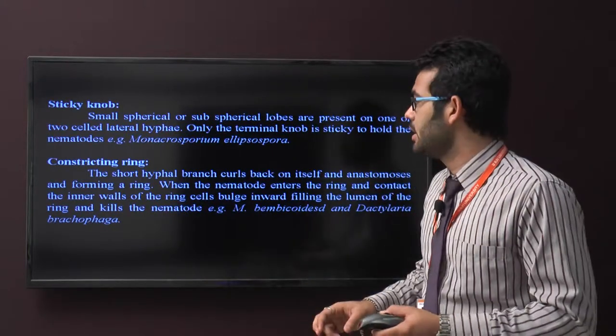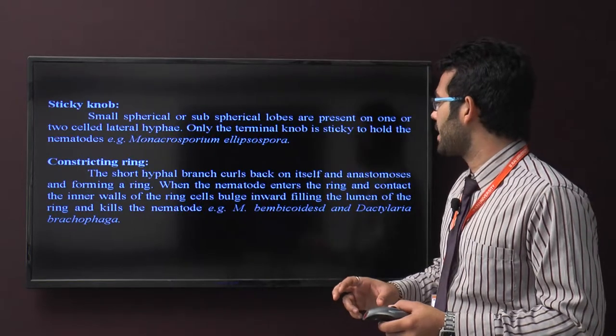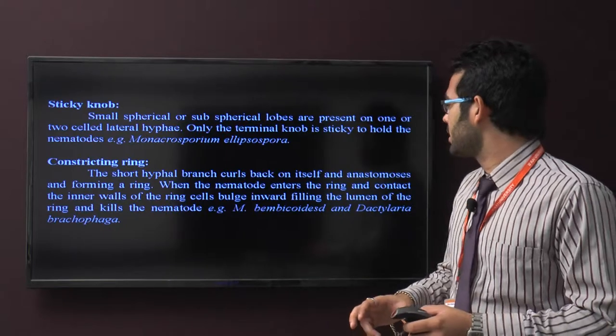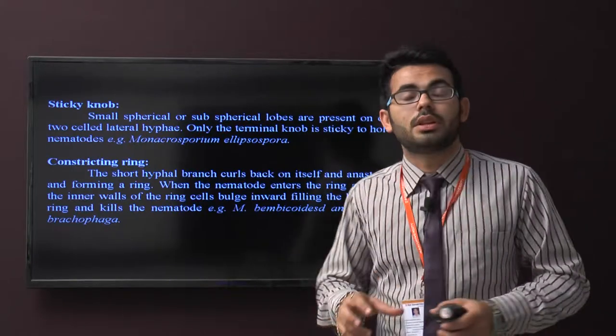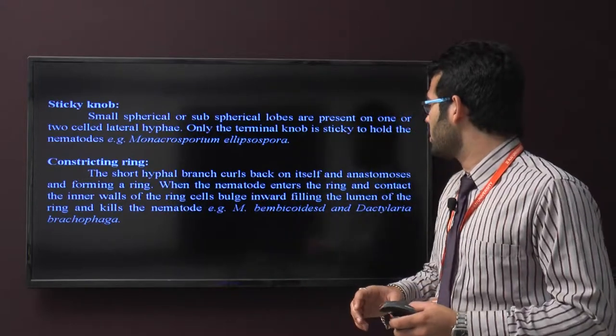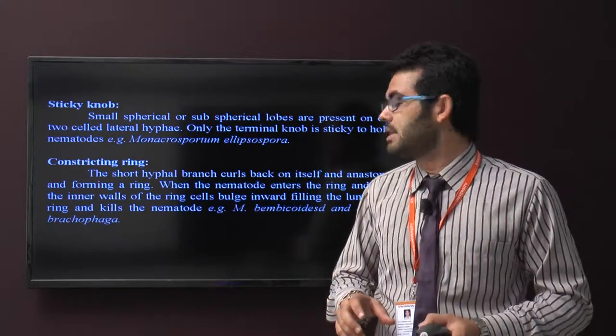Constriction rings: short hyphal branches curl back on the hyphae and anastomose forming a ring. When the nematode enters the ring and contacts the inner walls, the ring cells bulge inward, filling the lumen of the ring and killing the nematodes.